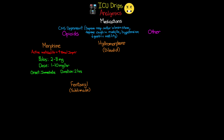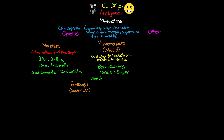Moving on to hydromorphone or Dilaudid — this is a good option when first-line treatments have failed or patients have a tolerance to pain medication. Compared to morphine, hydromorphone is actually a stronger medication. The bolus dose is typically anywhere from 0.2 to 1 milligram. When running as a continuous infusion the dose is typically 0.2 to 3 milligrams per hour. It also has an almost immediate onset and a duration of about two hours.